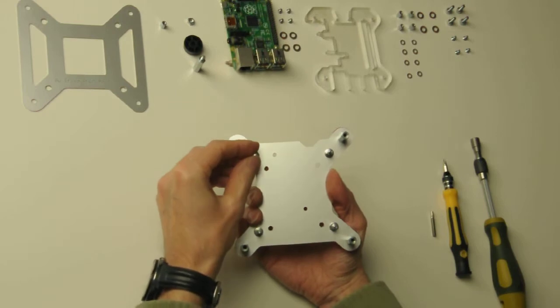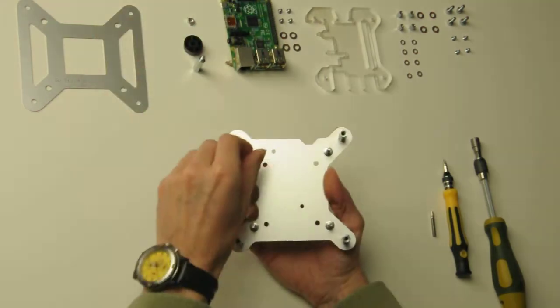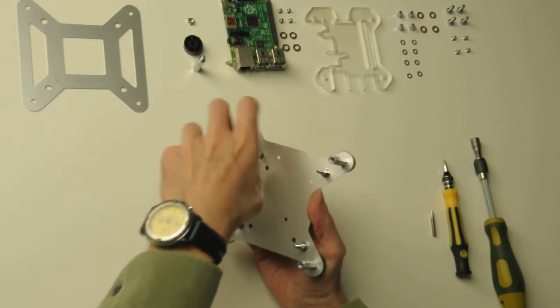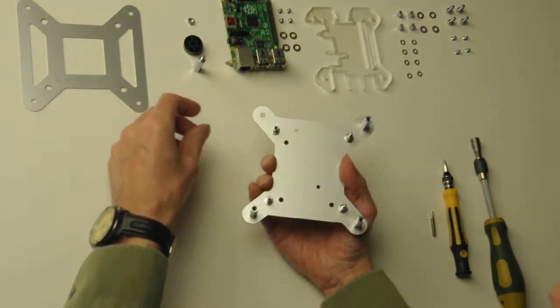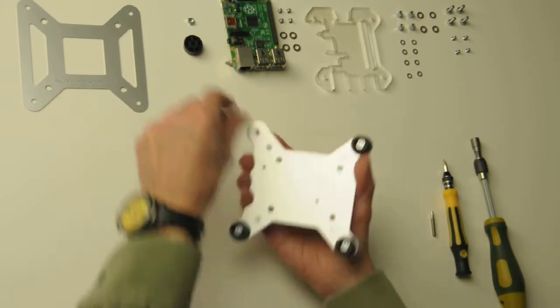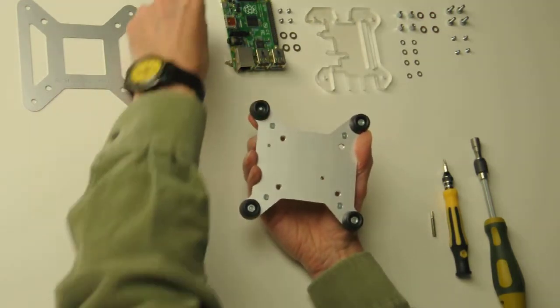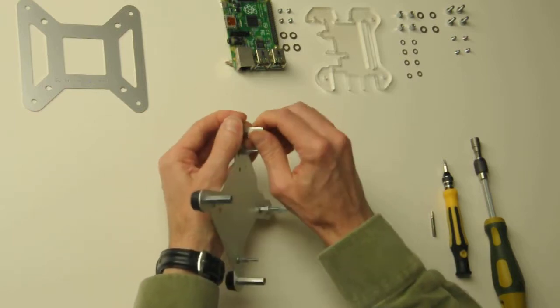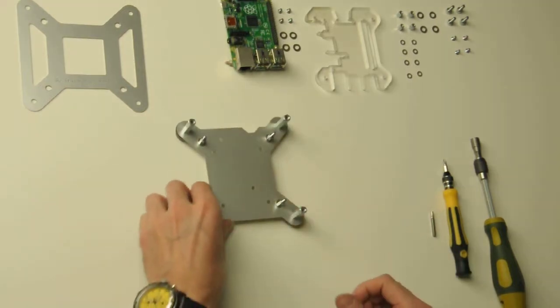I just put in a countersunk screw, the highest one, an M4 washer and a PCB spacer M3. Then a high-head bolt or connection bolt, they have many names, a foot and an M4 nut. Then you have your bottom assembly.